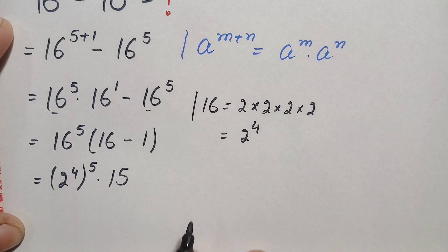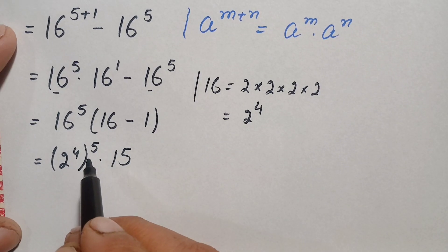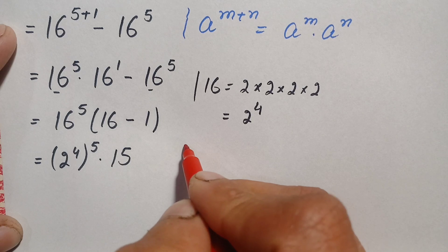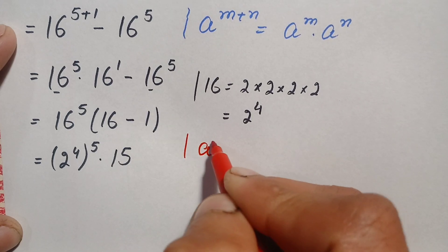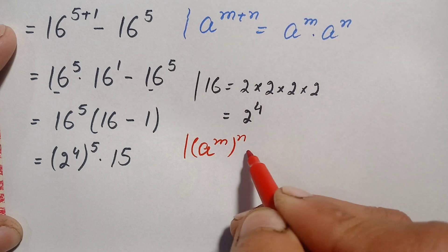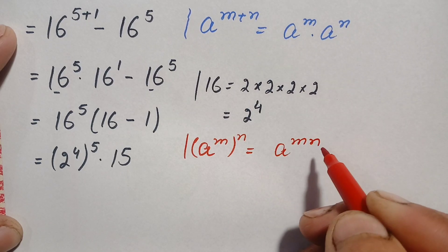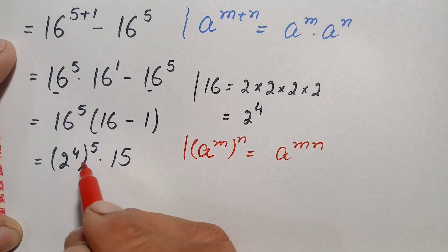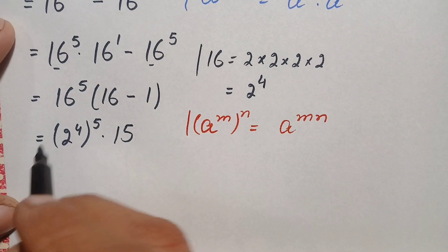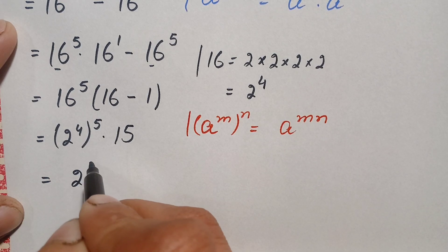Next, we apply the power-of-a-power identity: (a^m)^n = a^(m×n). Using this identity, we multiply the two exponents: 4 times 5 equals 20. So the expression simplifies to 2 to the power 20 times 15.